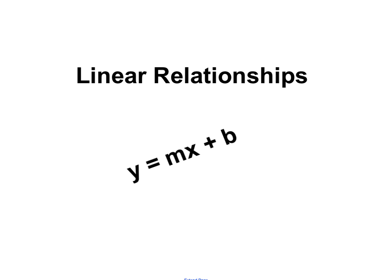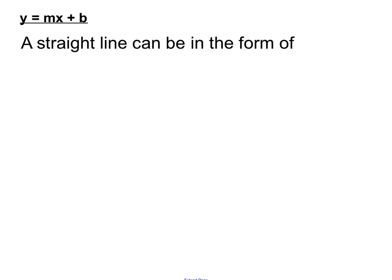Hi again. This is a linear relationships video, and in this video we're looking at the line equation format of y equals mx plus b in a bit more detail. A straight line can be in the form of y equals mx plus b. The y and the x tend to stay as y and x, but the m and the b will be numbers — so it might be y equals 3x plus 2, for example.